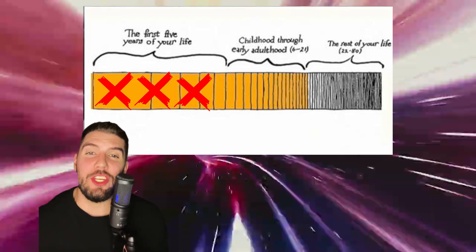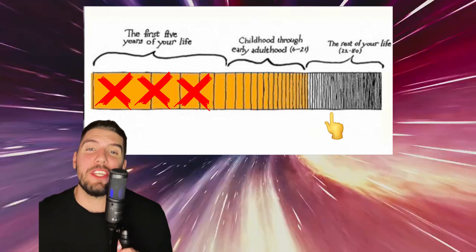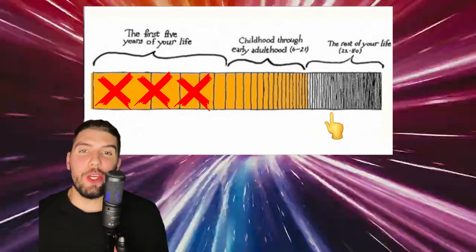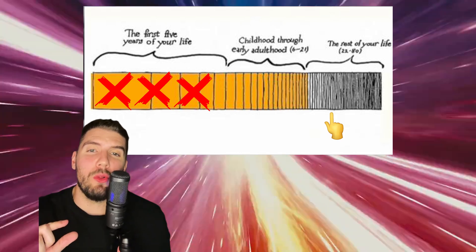Secondly, as we age, each additional year becomes a smaller and smaller percentage of how many years we've lived so far. So each year that goes by becomes a smaller and smaller sliver of our total lives.